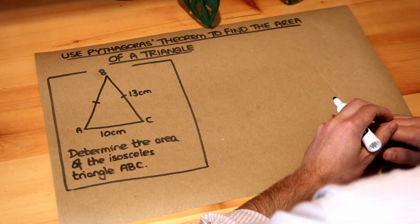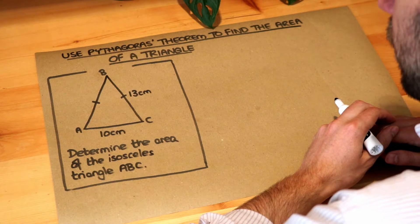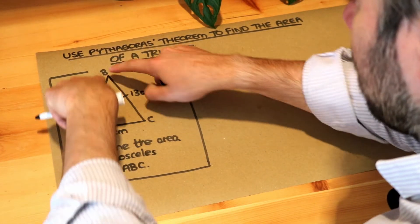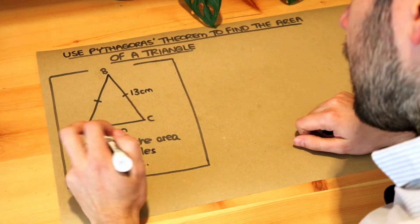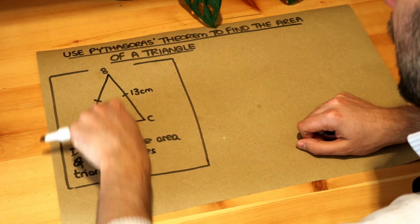Hello and welcome to this Dr. Frost video on using Pythagoras theorem to find the area of a triangle. We've got this isosceles triangle here because these two lengths are the same. We want to determine the area of isosceles triangle ABC.